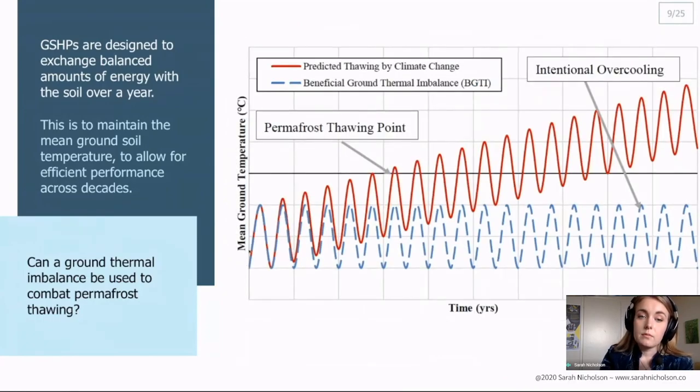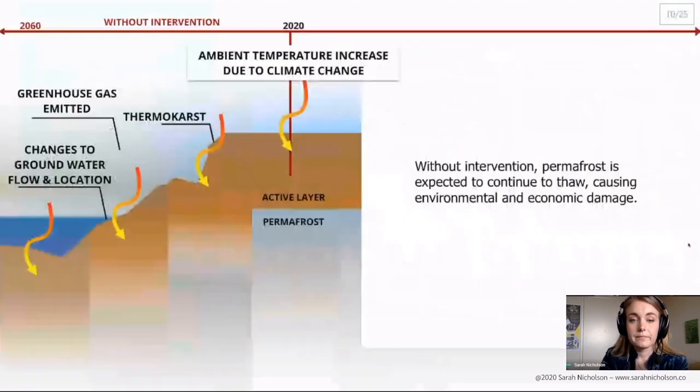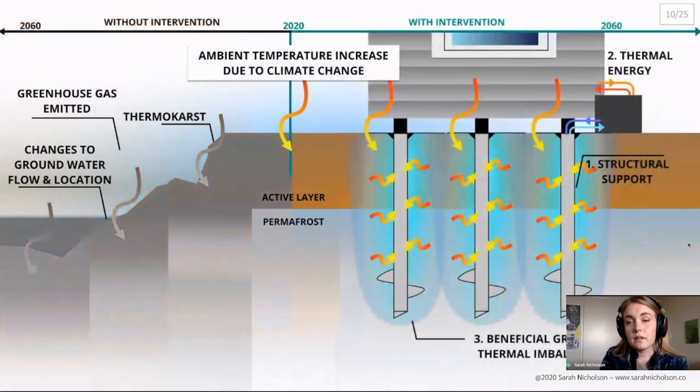So here we can see the predicted ground temperature warming up by climate change which will eventually reach a thawing point. And I am showing here the application of a heating dominant load which would intentionally over cool the soil and attempt to mitigate and keep that mean ground temperature constant. Without any intervention there will be extreme economic and environmental cost to these communities. But with an intervention there is potential that these piles could provide a beneficial ground thermal imbalance to locally maintain the permafrost as well as structural support and thermal energy.